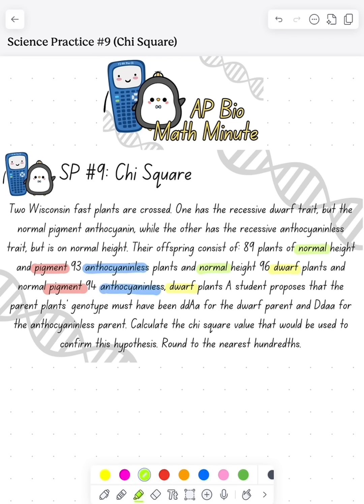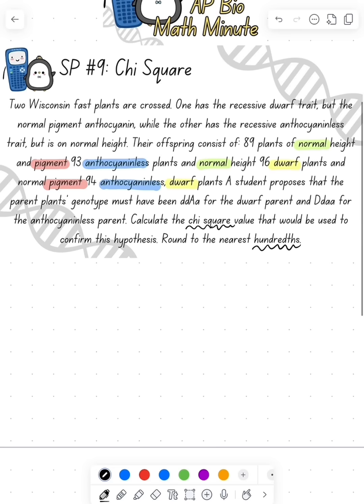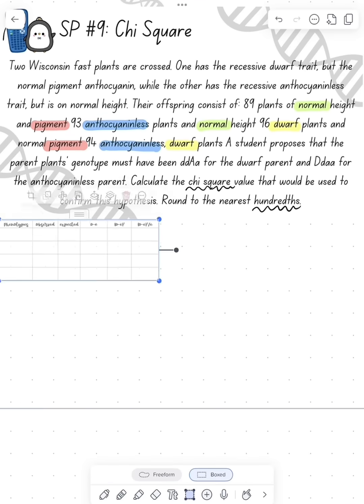So we're going to run a chi-square to see if that genotype is actually what we find. And we're going to round that to the nearest hundredth place. So I always solve it with this chart.